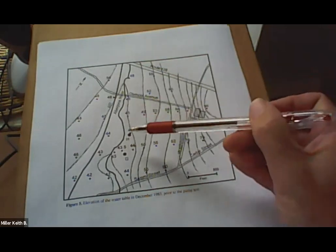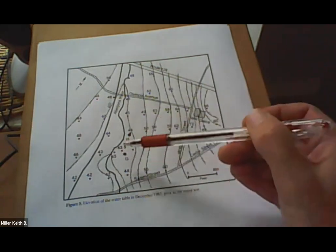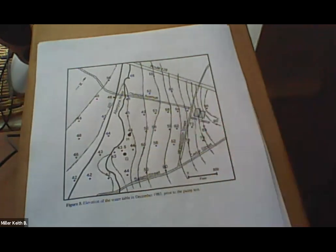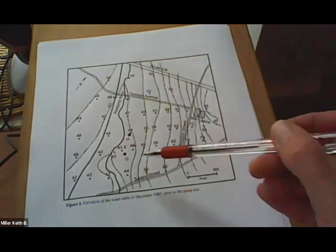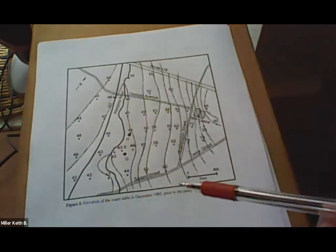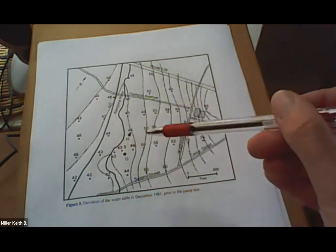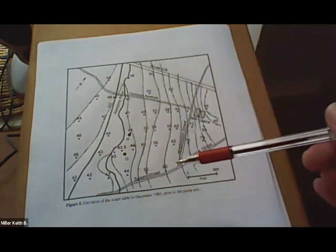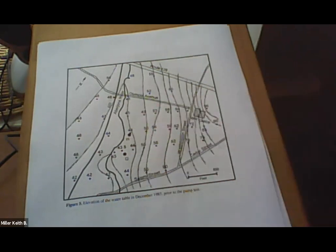All right. Now, notice that there are these two dark circles here. Those represent wells. Now this map was done before these wells were pumped. So the next map I'm going to show you is the same area with elevations to the water table or elevations the water table taken after those wells were pumped.